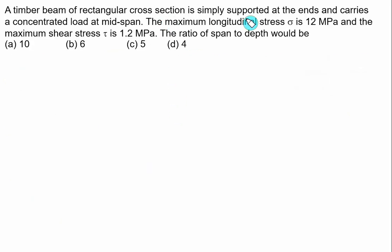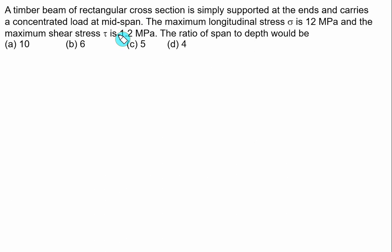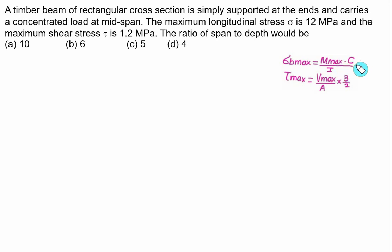A timber beam of rectangular cross section is simply supported at the ends and carries a concentrated load at midspan. The maximum longitudinal (bending) stress σ = 12 MPa and the maximum shear stress τ = 1.2 MPa are given. We need to calculate the ratio of span to depth.